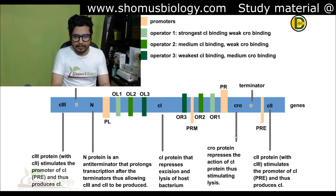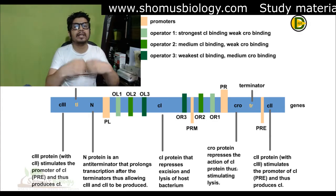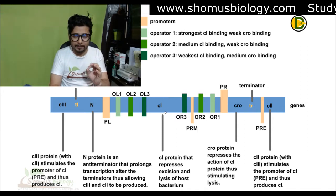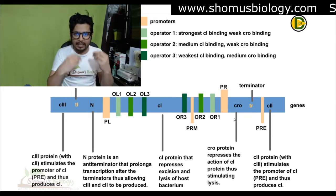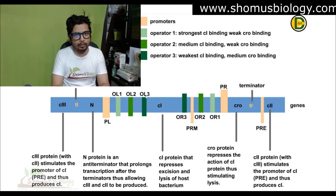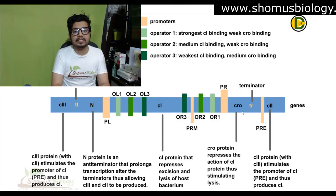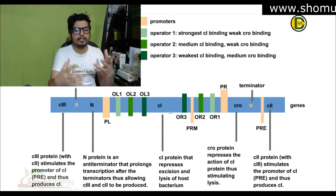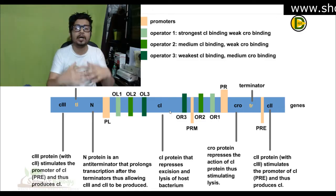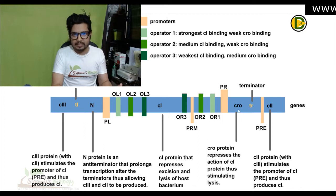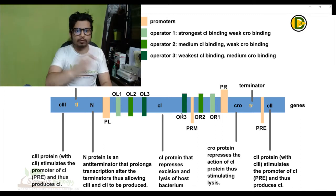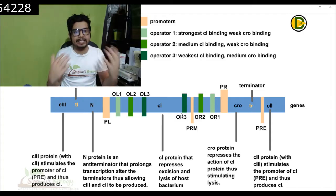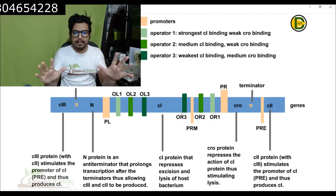CRO protein represses the action of C1, thus stimulating lysis. CRO's job is to stimulate the lytic cycle and inhibit C1, while C1 inhibits CRO. Both CRO and C1 are regulatory proteins that can bind to operators OL1, OL2, OL3, OR1, OR2, OR3. However, C1 has higher affinity towards the operators — if both are present in equal concentration, C1 will always bind preferentially. Only if CRO is present in higher concentration than C1 will CRO bind to the operator sites.